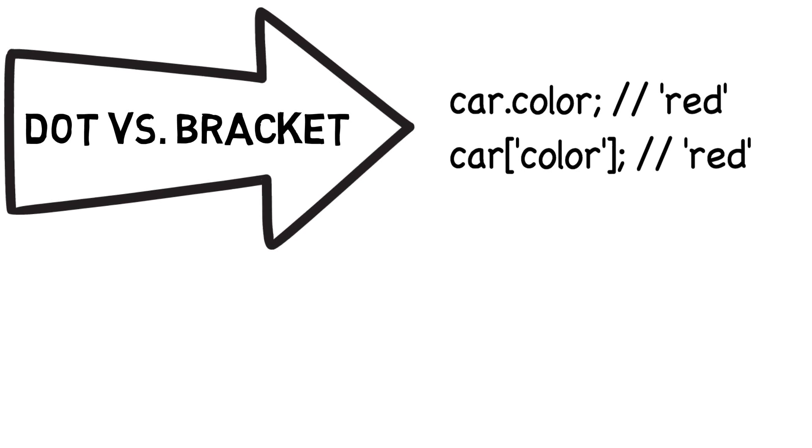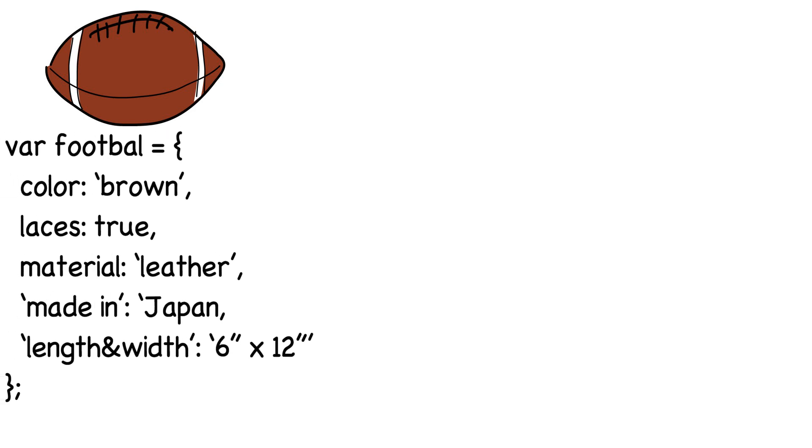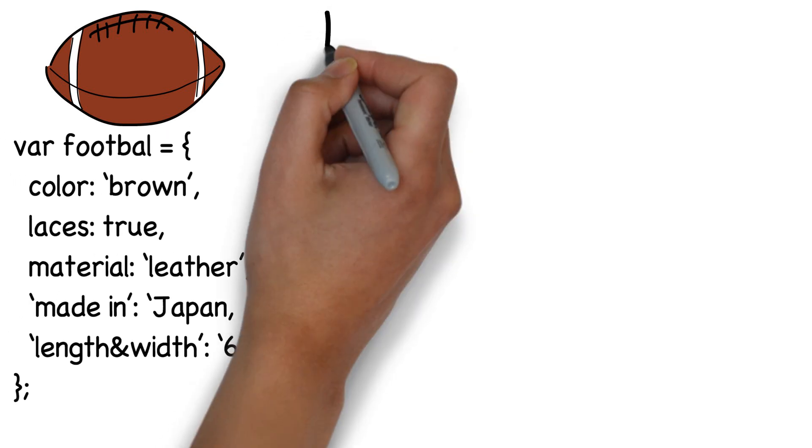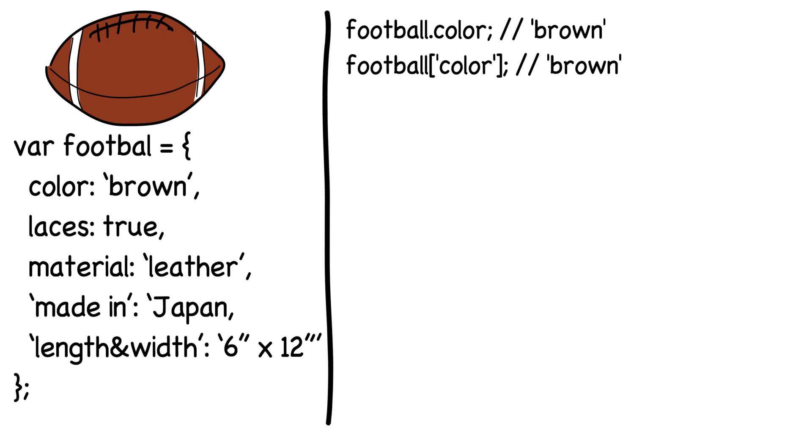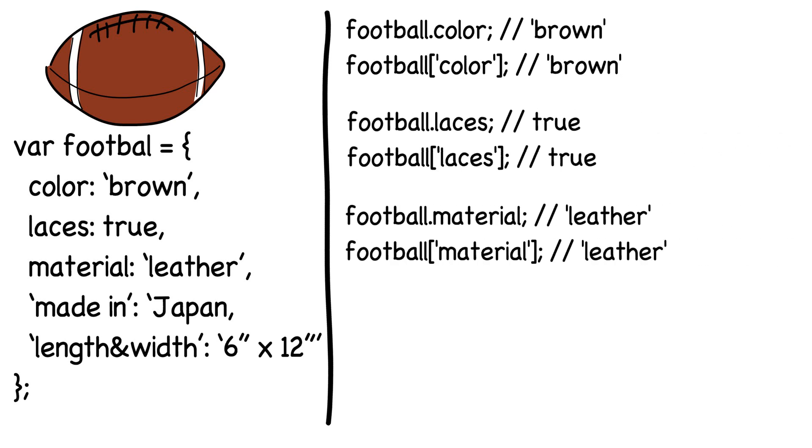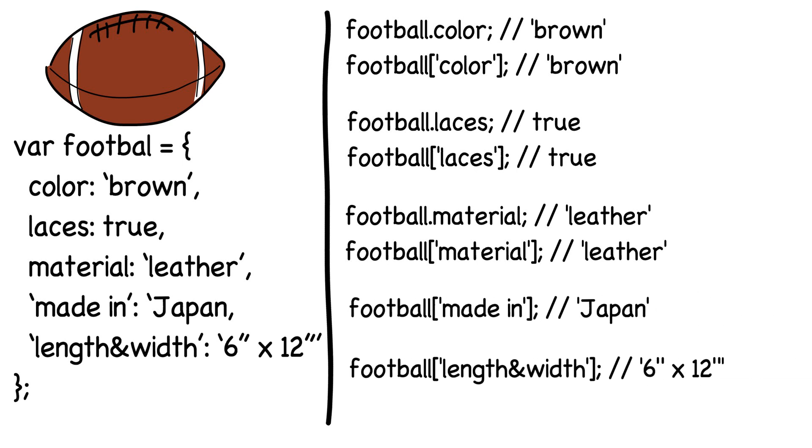Let's close up this lesson by taking one last look at a football and accessing all of its property value. As we look at this, we see that dot notation is going to give us access to the first three properties. However, when we get to the property made in, we can't access it because there is a space. Also, the property length and width doesn't have a space but it does have a special character making it an invalid variable. Remember, the quotes around the properties tip us off that we will most likely need bracket notation to access those properties long before we even begin to analyze them.